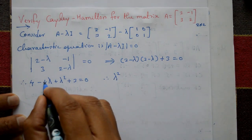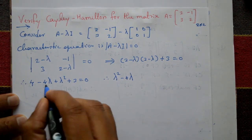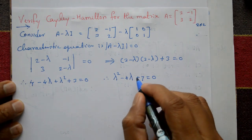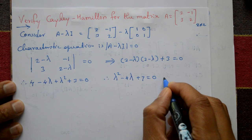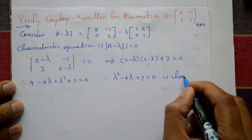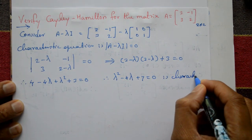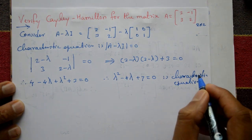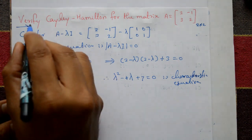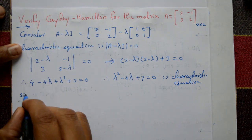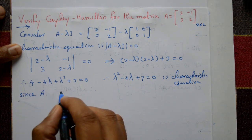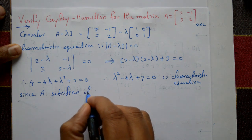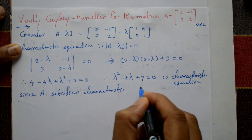Therefore: lambda squared minus 4 lambda, and 4 plus 3 is 7, so the characteristic equation is lambda squared minus 4 lambda plus 7 equals 0. Since A satisfies its own characteristic equation by the Cayley-Hamilton theorem.